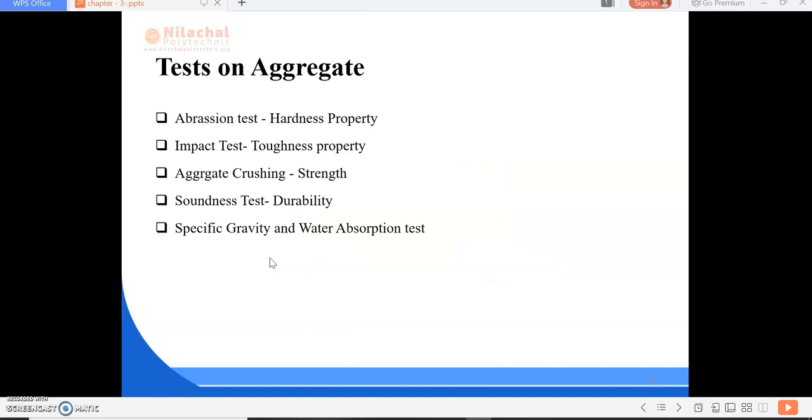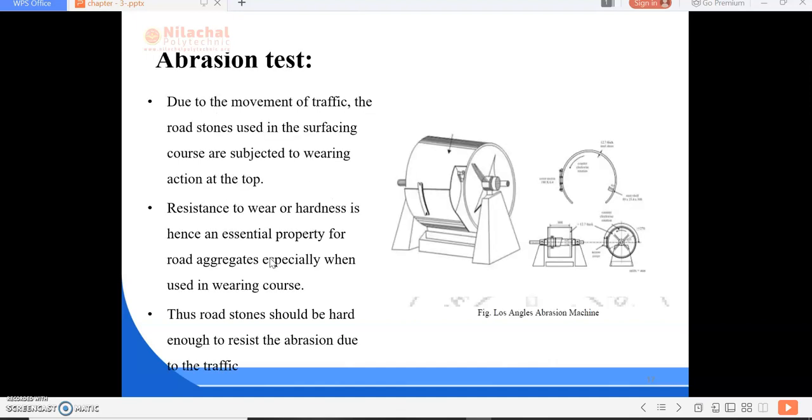CBR is only for the soil mass. Now next is tests on aggregate. There are various tests we have to conduct for aggregate because we have to take the proper quality of aggregate for construction of roads. These include abrasion test to find hardness property, impact test to know toughness property, aggregate crushing to know strength, soundness test for durability, and specific gravity and water absorption test.